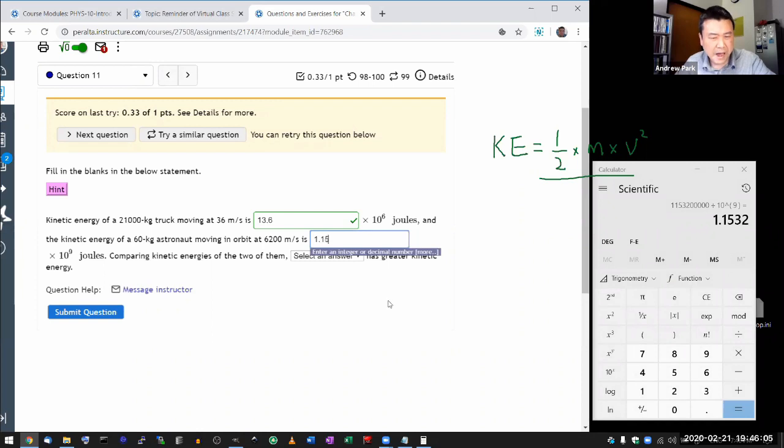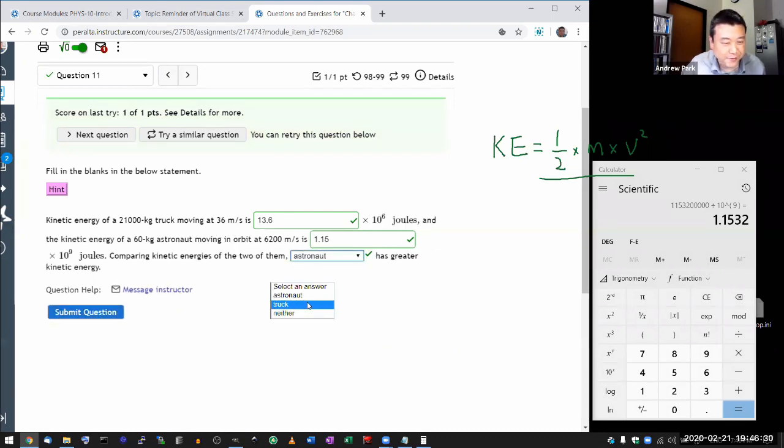Yeah, and I recommend with all these number of questions that you type in at least three significant figures. That will make sure that you're okay as far as rounding rules. Comparing the kinetic energies of the two of them, well, the astronaut, it's larger number. So the astronaut has larger kinetic energy. I don't think there's ever a scenario where it's going to be the truck, the numbers work out here.